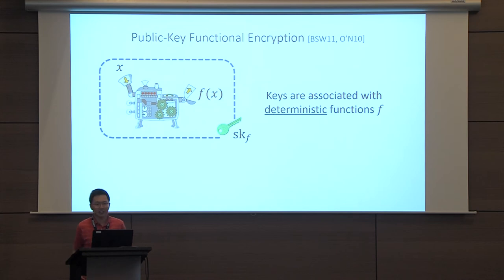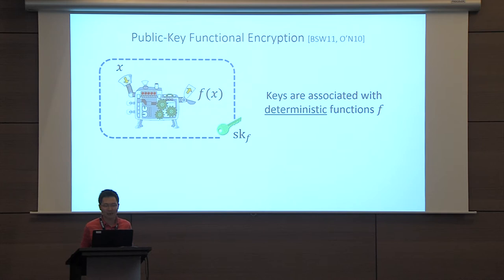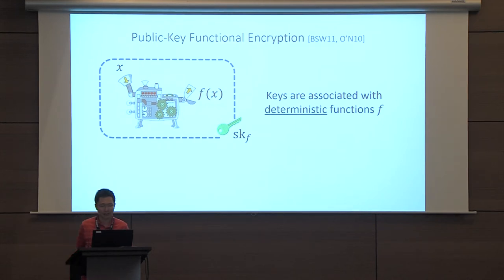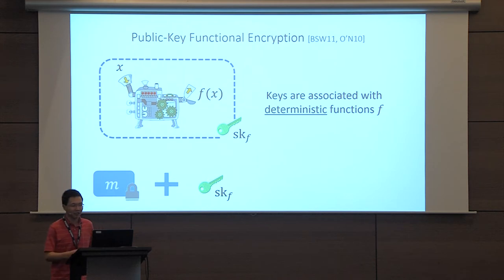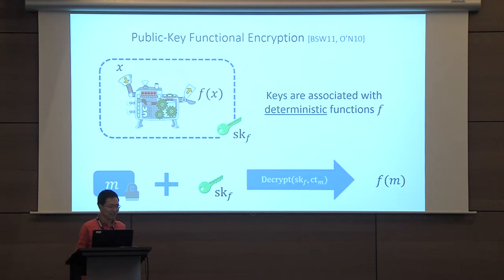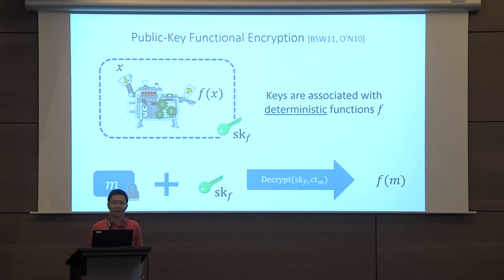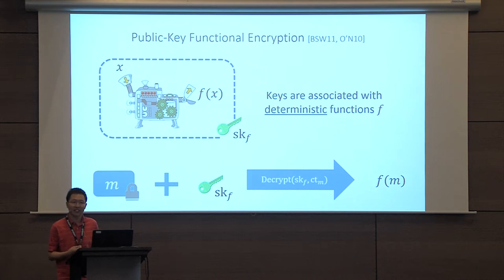In the last 10 years or so, functional encryption has really emerged as a general paradigm for unifying different kinds of encryption schemes. In a functional encryption scheme, keys are associated with a deterministic function F, and ciphertexts are associated with messages. The guarantee is that if you take a ciphertext encrypting a message M and a key for a particular function F, and run a decryption algorithm, what you learn is the function evaluated on the underlying message M.